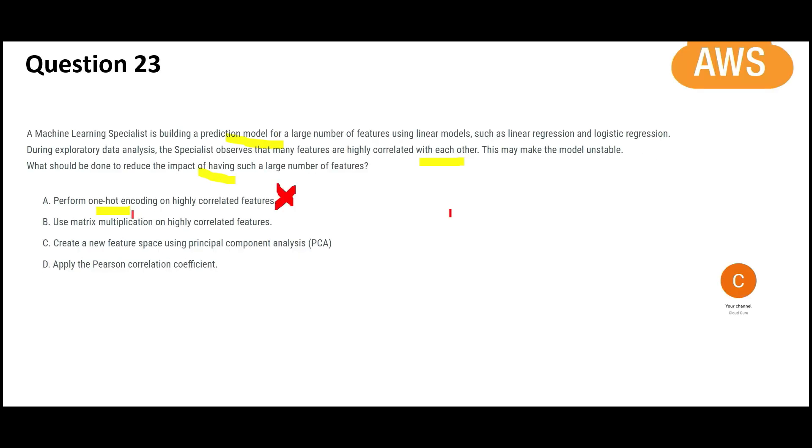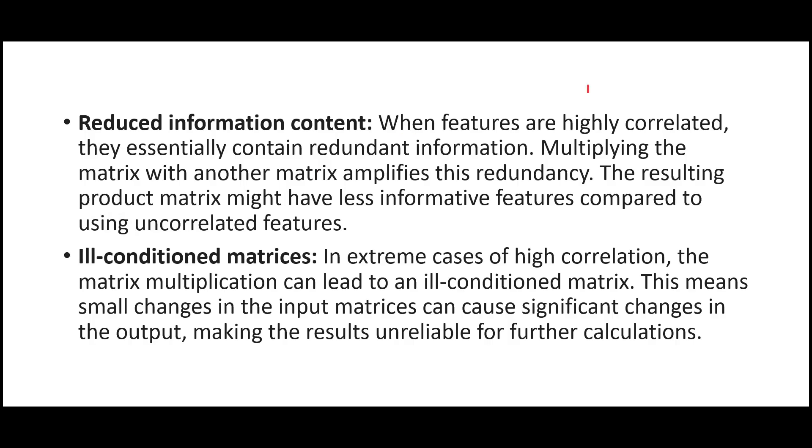What about option B? Matrix multiplication. Your features are highly correlated. That means there is redundancy. When you multiply that, it will again amplify. If you multiply, that means it is already having redundant features. Now it will become more redundant.